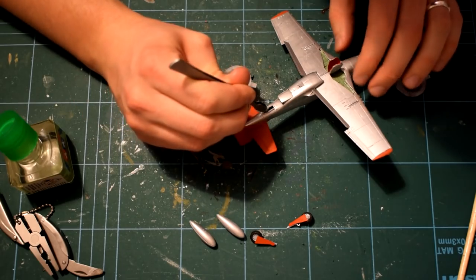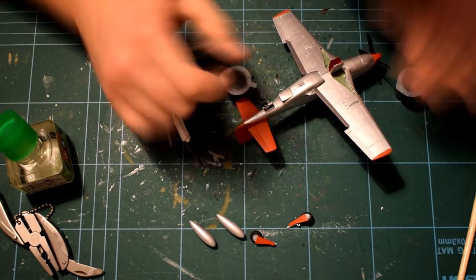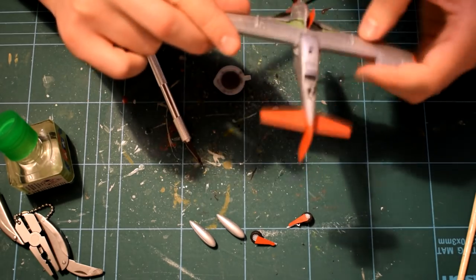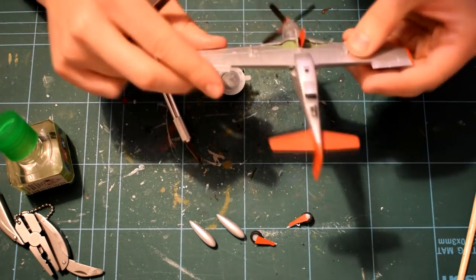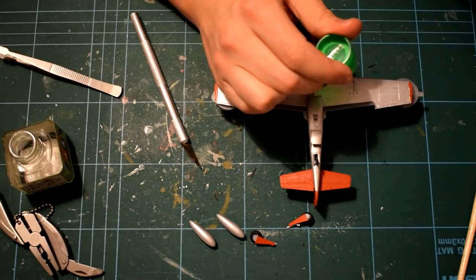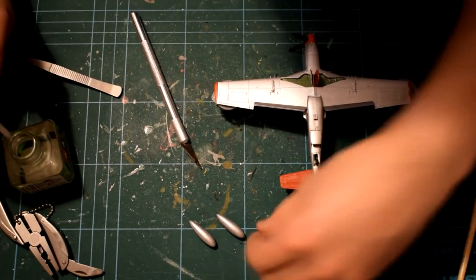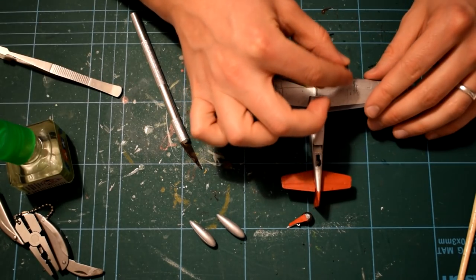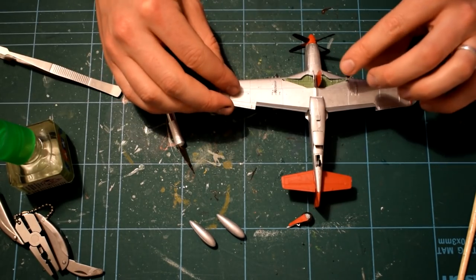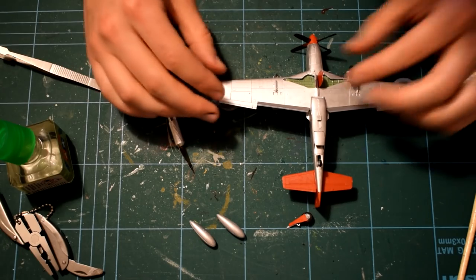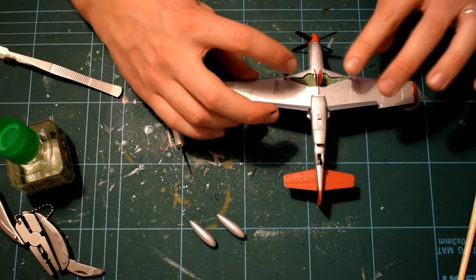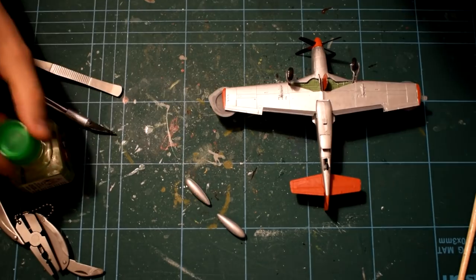The P-51D Mustang featured an armament of six 50 cal machine guns, and had a top speed of over 400 mph with a range of 1,650 miles, thanks to the aid of the external drop tanks. The aircraft that Airfix have chosen to depict in this kit is that of a red tail of the 100th fighter squadron, flown by first lieutenant Spurgeon Ellington, based in Italy in 1944.